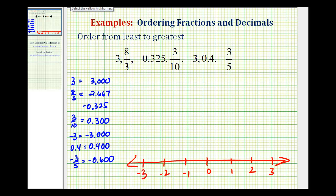So we know the negative numbers are going to be less than the positive numbers. So let's focus on the negative numbers first. We have negative 0.325, negative three, and negative 0.600. Well, the smallest number is going to be negative three. So let's label this number one.